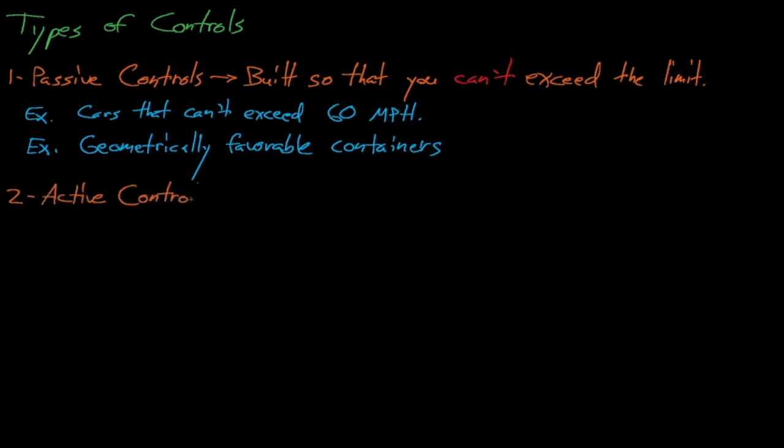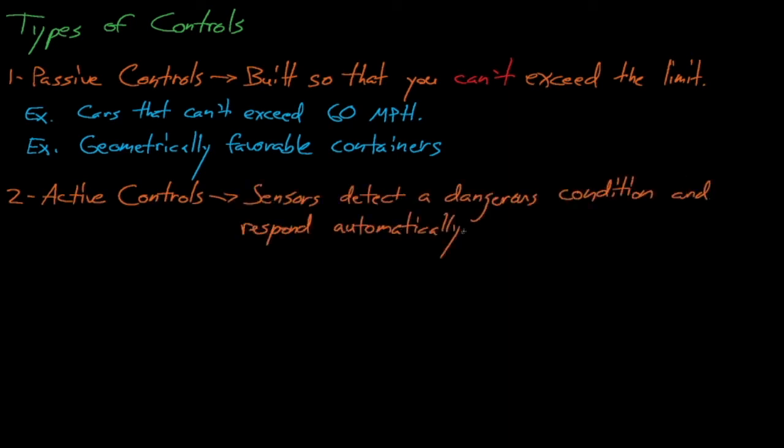Active controls use some sort of sensor to detect a dangerous condition, and then they respond automatically to ensure that the system remains safe. Some examples of active controls could include a sensor that checks your car's speed and beeps if you're speeding, but really active controls should automatically intervene instead of relying on you to respond to an annoying beep. So instead, perhaps a better example of an active control is a sensor that automatically begins braking your car when it detects that you're approaching another car or some barrier at an unsafe speed.